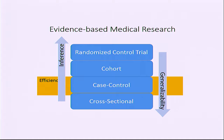Nobody would argue that the randomized control trial can often be the best study for inference, but for generalizability there's always a tradeoff — just like sensitivity and specificity. Somewhere in the middle, in an observational way, you might have a hybrid between the efficiency of a case-control study and the temporality of a cohort study. For observational design, nested case-control designs and case-cohort designs might be the most effective, particularly for understanding biomarkers and their association with cancer.